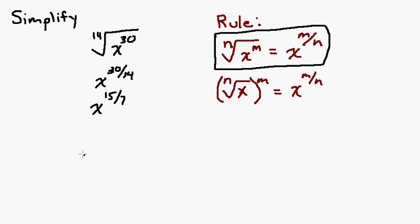Now we convert back to radical form. The 7 is the index, so we have the 7th root of x to the 15th. You can see that from the beginning, if you had just canceled the common factor of 2 from both 30 and 14 like a fraction, you'd end up with the same thing — that's a shortcut, and this rule is the reason why.